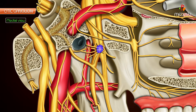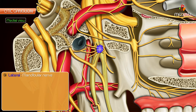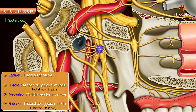Relations. Laterally, it is related to the mandibular nerve. Medially, it is related to the tensor veli palatini muscle. Posteriorly, it is related to the middle meningeal artery. Anteriorly, it is related to the medial pterygoid muscle.